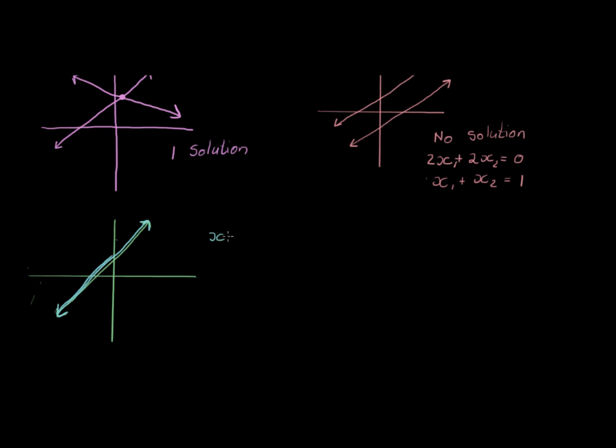For example, we might have x plus y is equal to 1 as our one equation, and the other one might be 2x plus 2y is equal to 2. These two equations are actually saying the same thing even though they are two different equations. Well, they seem to be the same one.